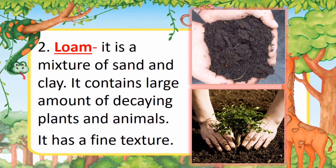Second is loam. It is a mixture of sand and clay. It contains a large amount of decaying plants and animals. It has a fine texture. This type of soil is ideal for the growing of plants.